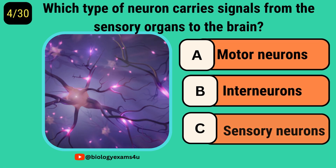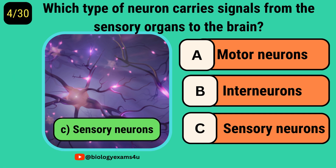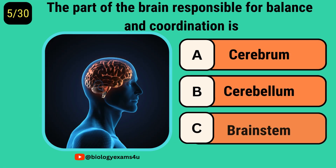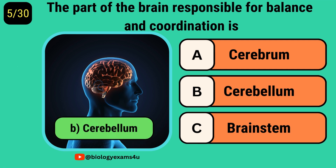Which type of neuron carries signals from the sensory organs to the brain? Sensory neurons. The part of the brain responsible for balance and coordination is? Cerebellum.